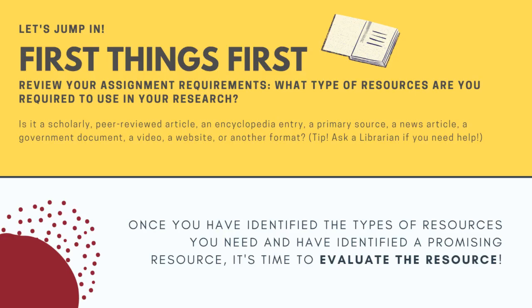Let's jump in. First things first, review your assignment requirements. What type of resources are you required to use in your research? Is it a scholarly peer-reviewed article, an encyclopedia entry, a primary source, a news article, a government document, a video, a website, or another format? Tip: ask a librarian if you need help. Once you have identified the types of resources you need and have identified a promising resource, it's time to evaluate the resource.